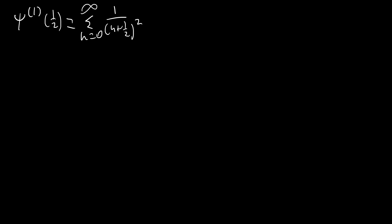Trigamma(1/2) is actually a little bit interesting because there are two different ways to approach this. First, we can just plug it into the definition. We can also rewrite this as the sum from n=0 to infinity of 4/(2n+1)², bringing that 4 outside. This is a pretty interesting sum because we have 1/(2n+1)², which looks a lot like the zeta function, except we're missing the even numbers.